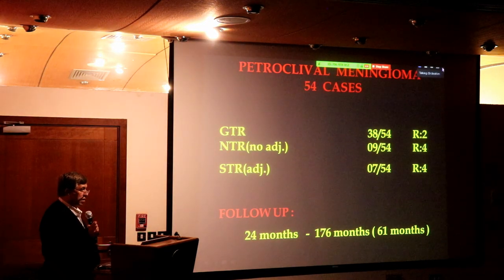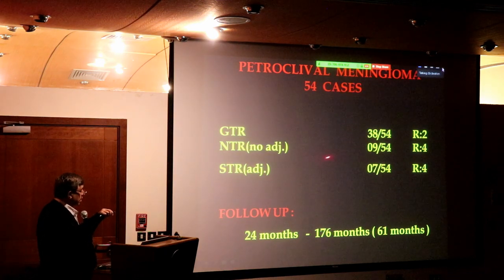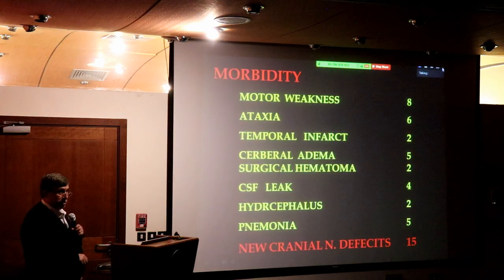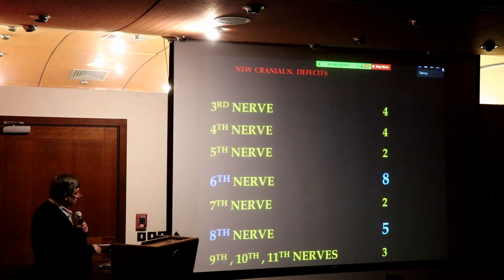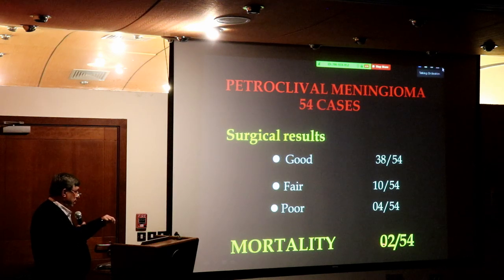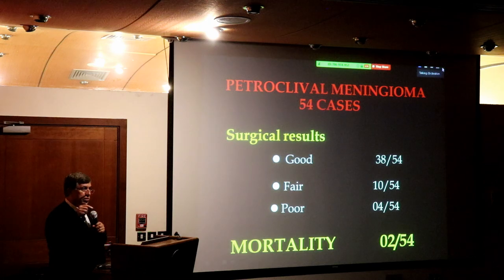Gross total resection — you cannot remove Simpson grade 1; not me, not anybody, not any master in the world. So you go for gross total resection. If you can't, you do near-total or subtotal resection. Minimum follow-up is two years. Morbidity — if you do surgery you will have complications. The most important is new cranial nerve deficits. Poor surgical results in 4 out of 54. Mortality: two patients died either during surgery, immediately after, or during the first month — perioperative mortality.